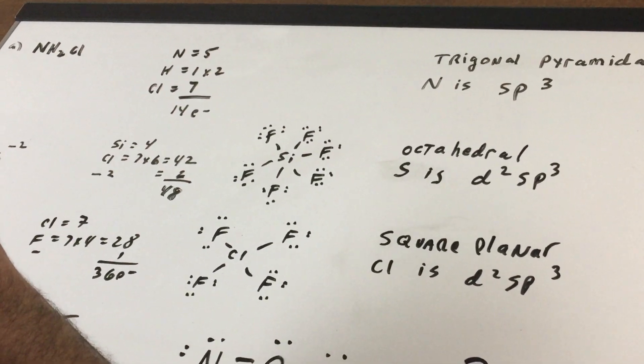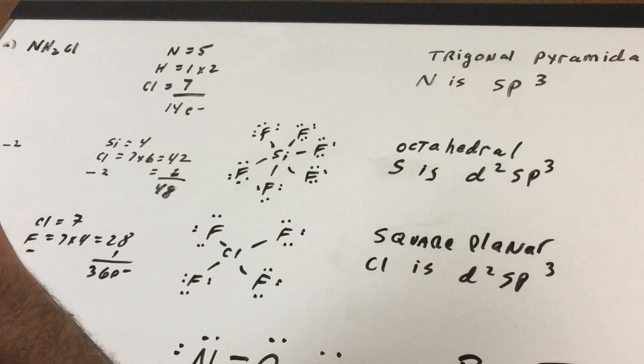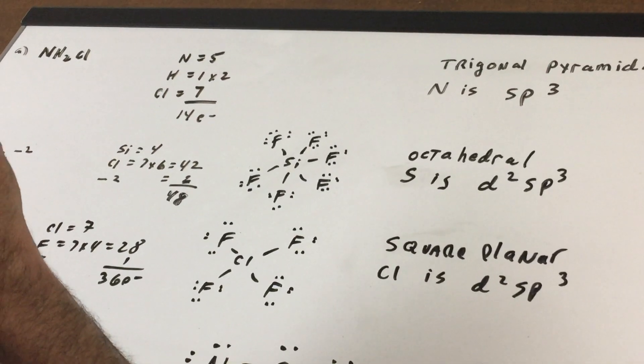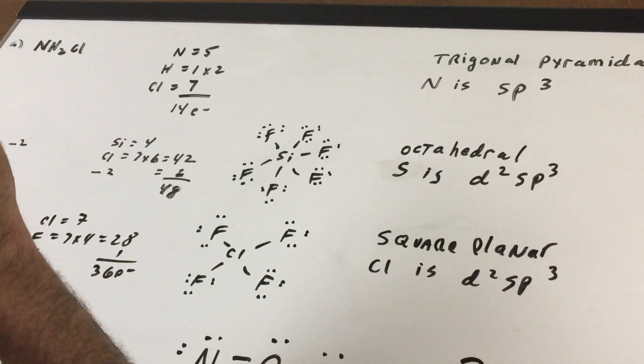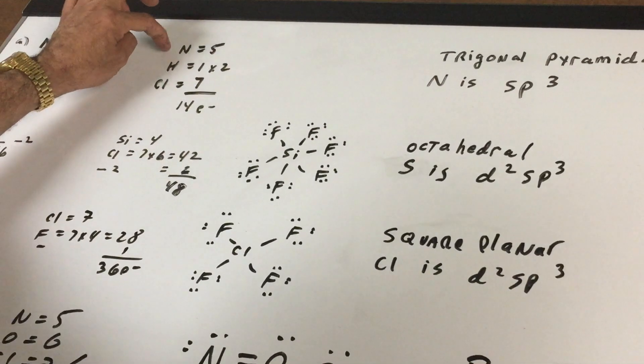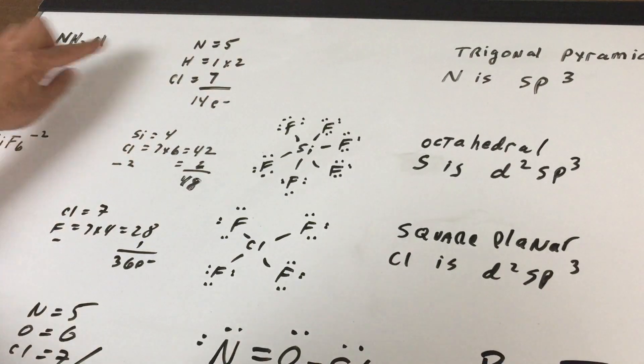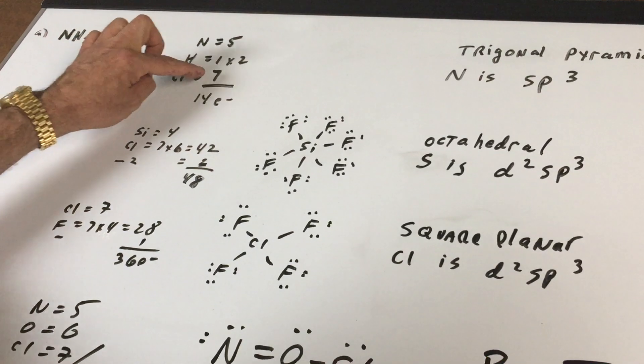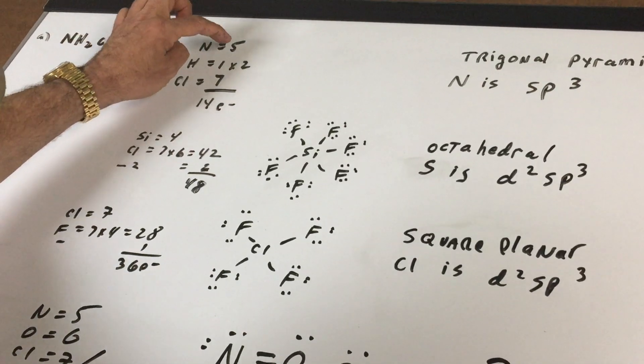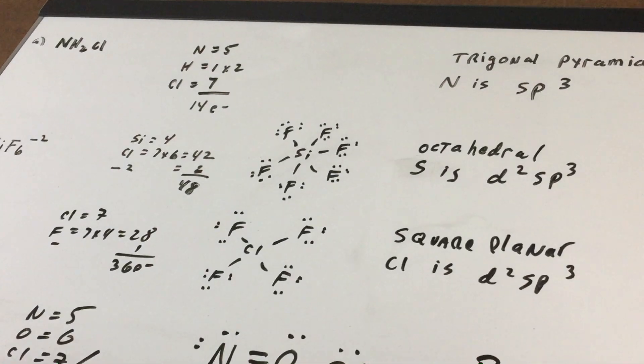Oxygen, even though it's in group 16, we're going to count it as group six. The halogens, instead of saying group 17, I'll just say group seven. Nitrogen is in group five, hydrogen is in group one and there's two of them, that's two. Chlorine is in group seven. So we have five, two, and seven gives me 14 electrons.